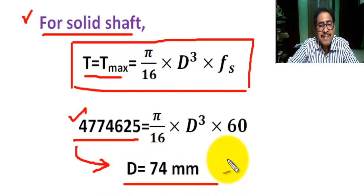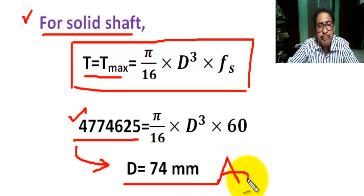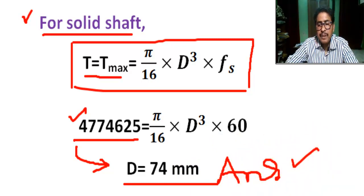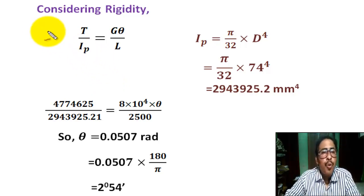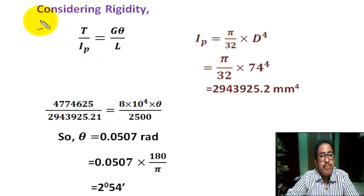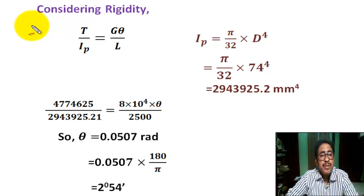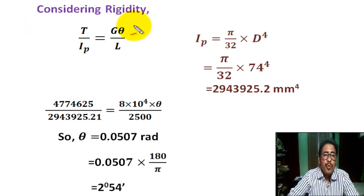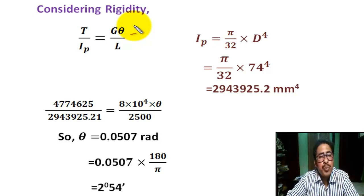This is the answer to the first part of the problem. Now we solve the second part of the problem — we find the angle of twist theta in radian.